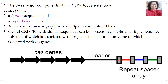Every time the palindromic sequence is the same, but the spacer is different. These spacers are nothing but the incorporated DNA of the virus. So this is the whole CRISPR locus with its three components: the Cas genes, the leader sequence, and the repeat-spacer array.